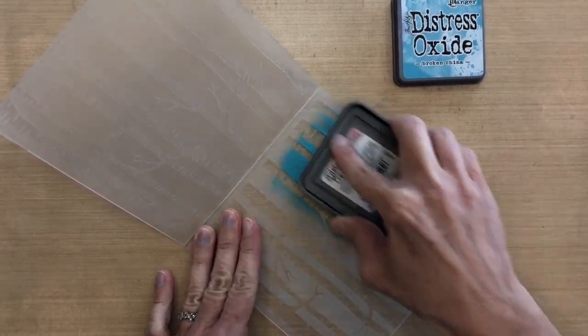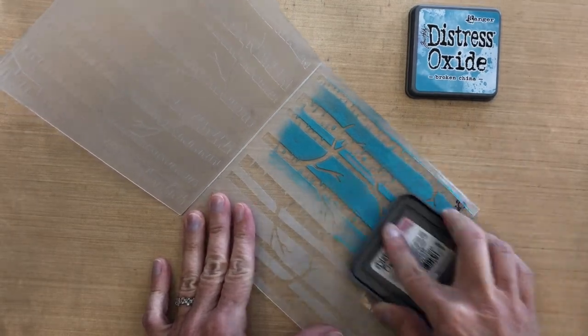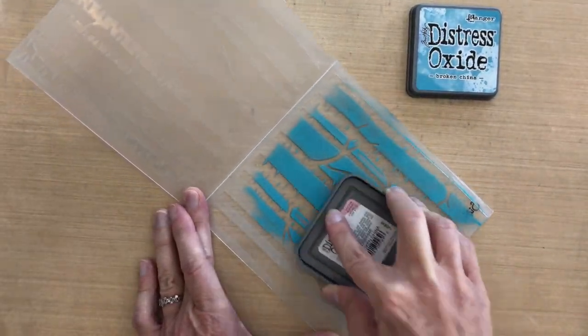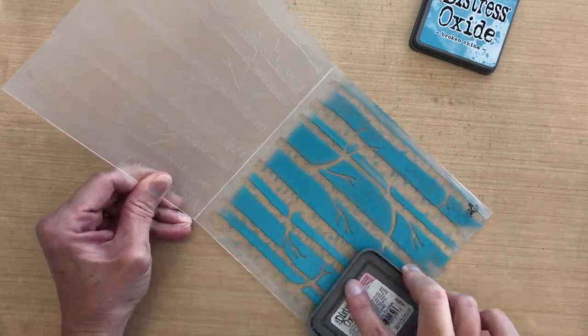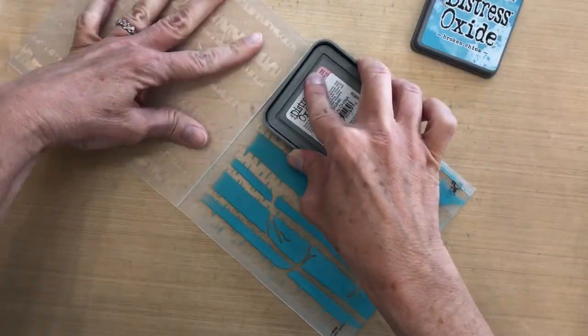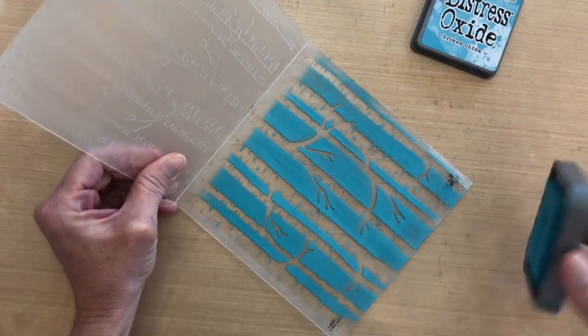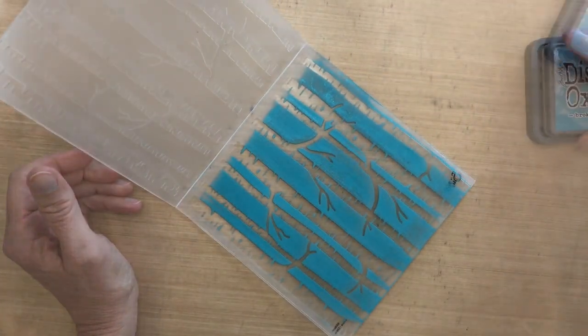I've never used my Oxide inks on an embossing folder before, so I decided to try that. I was really impressed with the coverage. You can actually see where the ink is on the embossing folder. Sometimes with dye inks they ball up a little bit, but you can already tell by looking at this that it gives really nice full coverage across the whole area.